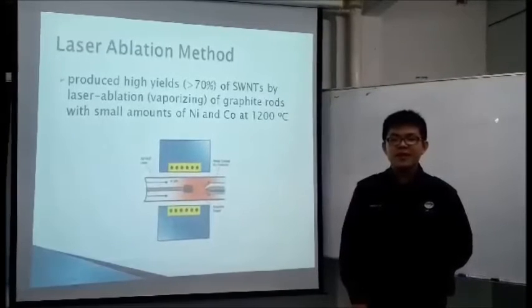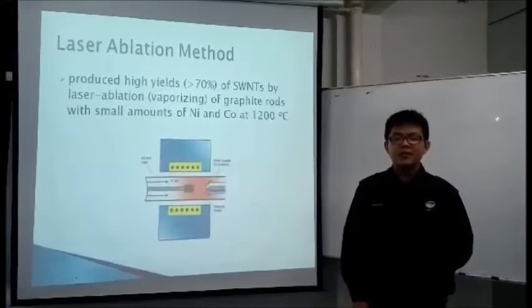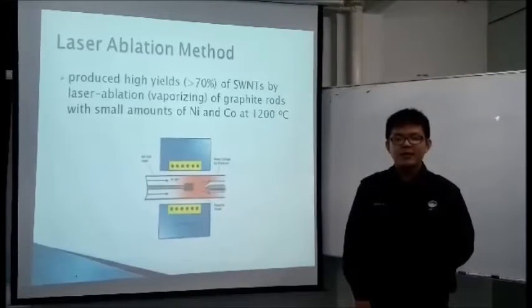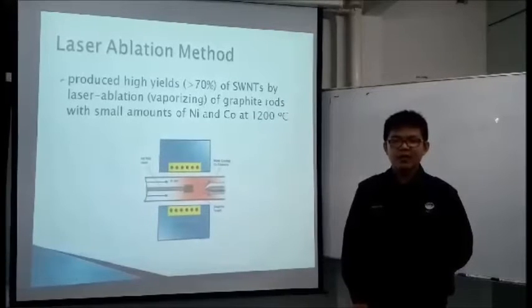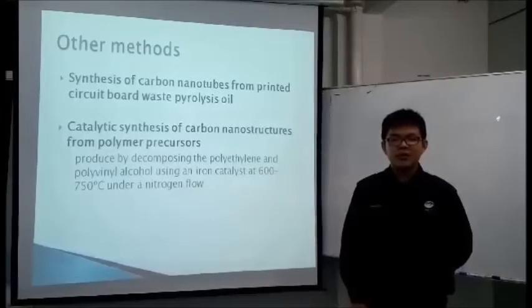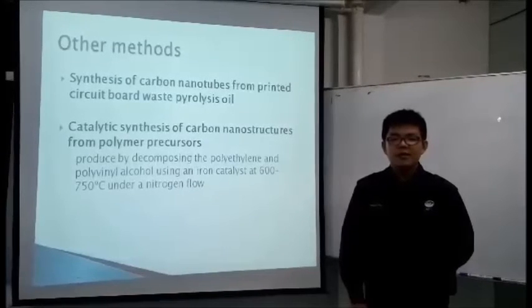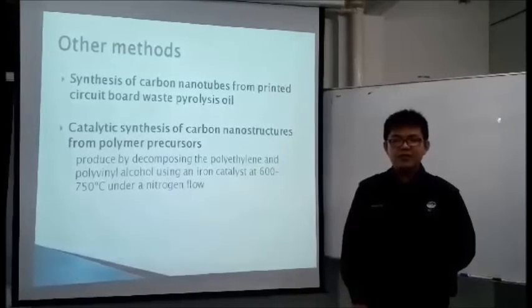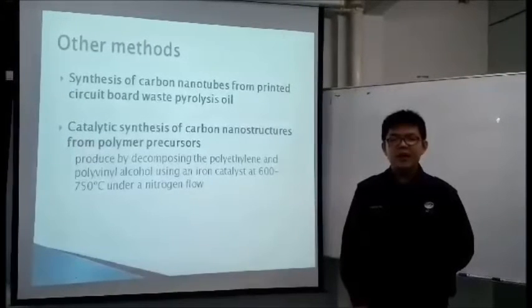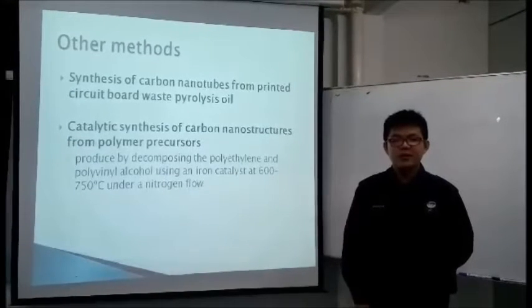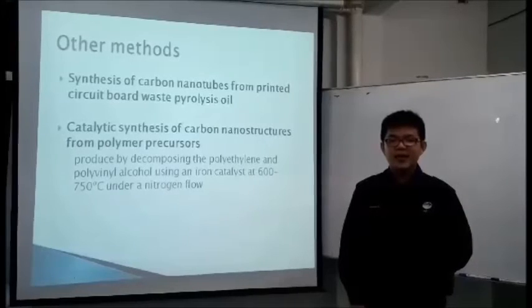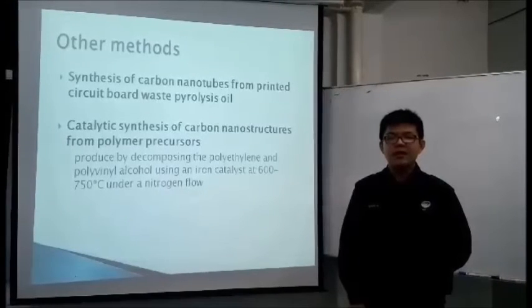The third method is the laser ablation method. It can produce a high yield of single wall nanotubes, up to more than 70%. By this method, we vaporize graphite rods with a small amount of nickel and cobalt at 1200 degrees Celsius. The other methods include synthesis of carbon nanotubes from printed circuit board waste pyrolysis oil, used as a precursor to prepare carbon nanotubes, and catalytic synthesis of carbon nanostructures from polymer precursors, produced by decomposing polyethylene and polyvinyl alcohol using iron as a catalyst at 600 to 750 degrees Celsius under nitrogen flow.